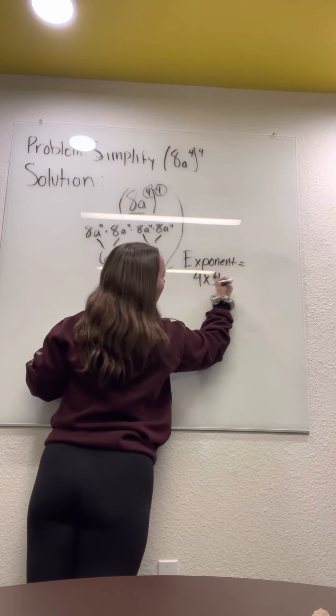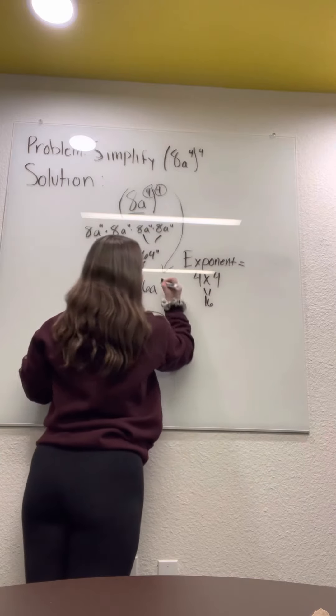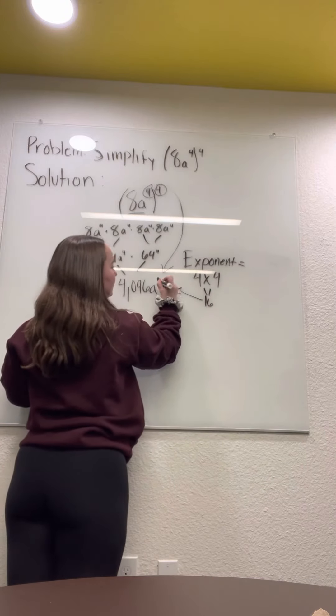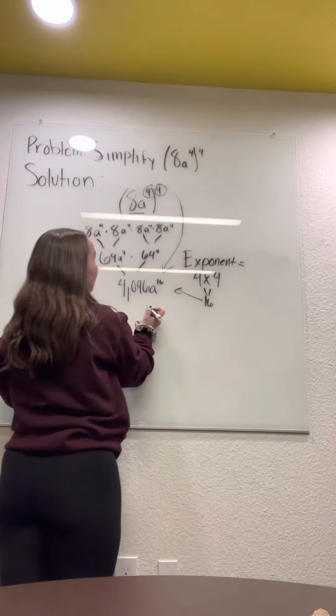And 4 times 4 equals 16. So we move that 16 to have this to the exponent since we are trying to simplify as much as possible.